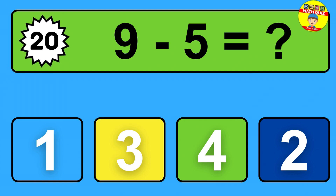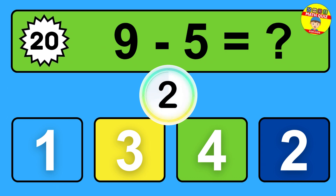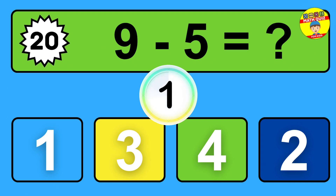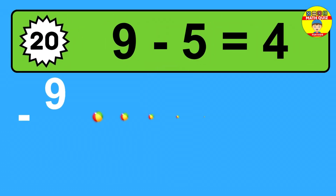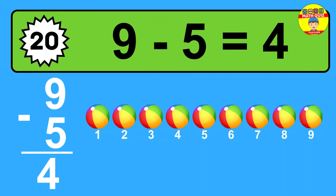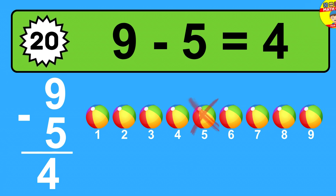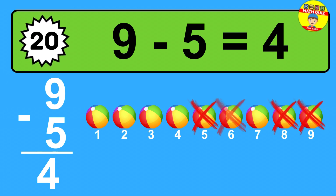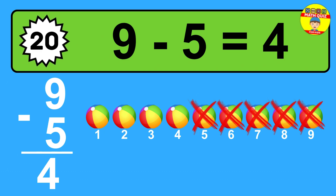Question twenty: nine minus five equals what? The answer is nine minus five is four. Let's count it: one, two, three, four.